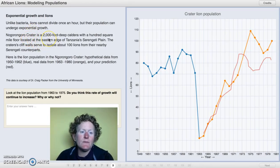Ngorongoro Crater is a 2,000 foot deep caldera with a 100 square mile floor located at the eastern edge of Tanzania's Serengeti Plain. The crater's cliff walls serve to isolate about 100 lions from their nearby Serengeti counterparts, so there isn't a lot of immigration or emigration.